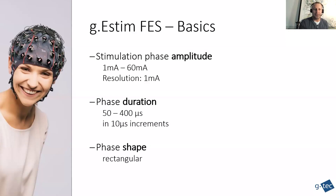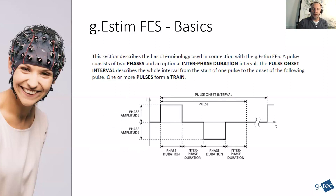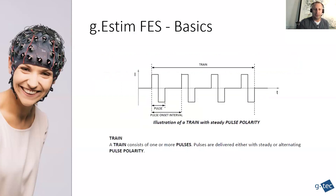We can change our stimulation phase amplitude — it can go from one milliampere up to 60 milliampere. You can also change the phase duration, so the intensity for the stimulation. You can actually completely define the stimulation shape and the intensity, the duration. So everything can be really defined with the Simulink functionality. We call it a train of several pulses. When you do multiple stimulations, there's also the interval in between, everything to be defined.